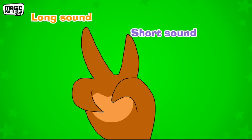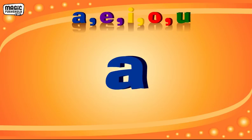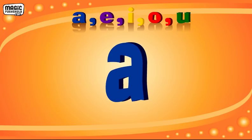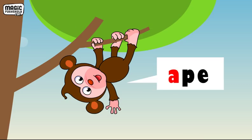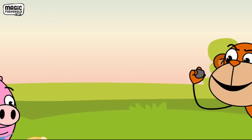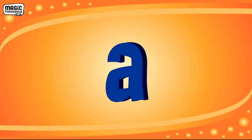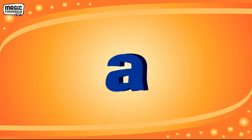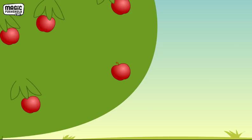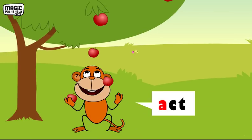Let's take the vowel A. It can be read as the long sound 'A', like in apron and aim. It can also be read as the short sound 'a', like in apple, act, and cat.